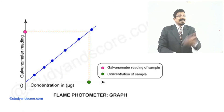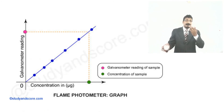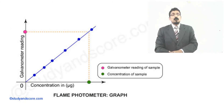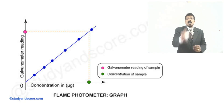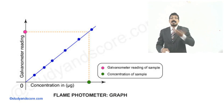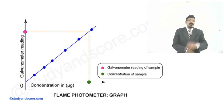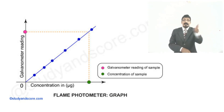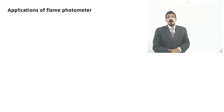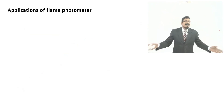This is a graph taken from the internet as an example, but you can prepare your own. You can see the unknown sample spot — a highly concentrated unknown — and by directly extrapolating from the y-axis to the x-axis, you can find out the concentration of the solution.